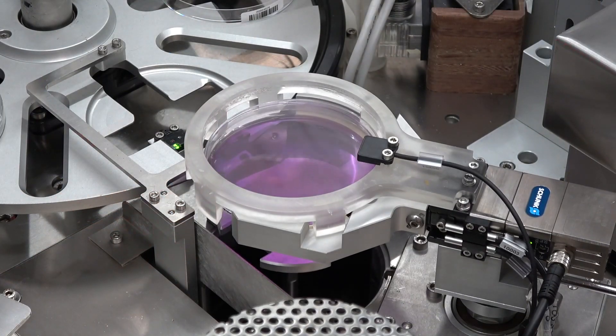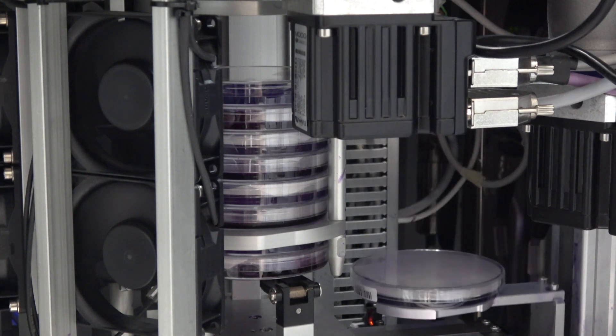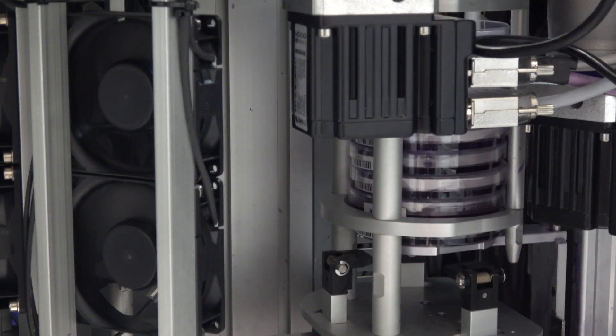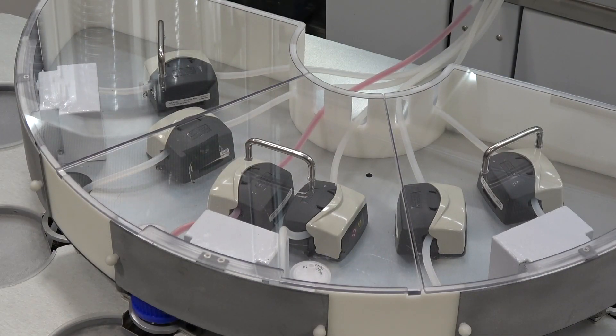If a second layer agar overlay is required, the Cyclone lowers the plate into a cooling chamber, allowing the agar to set before a second layer is applied. The Cyclone's open platform utilizes a multimedia module to switch between multiple agars seamlessly.